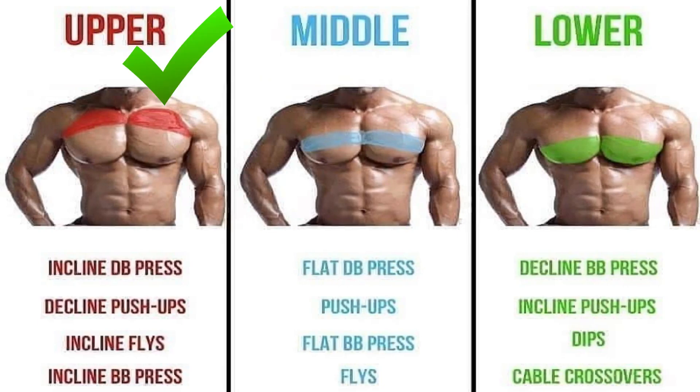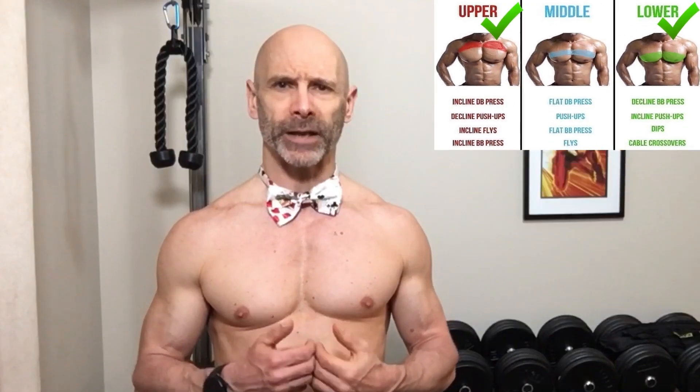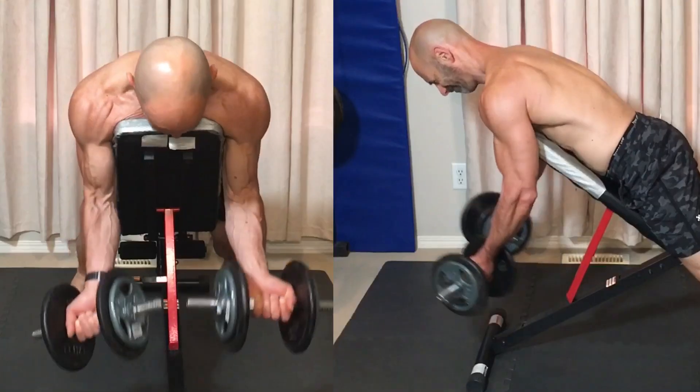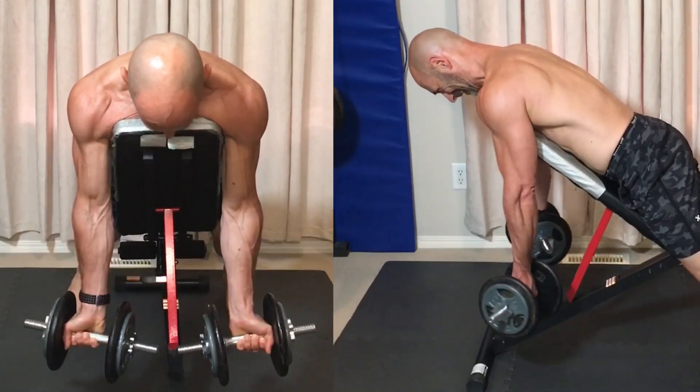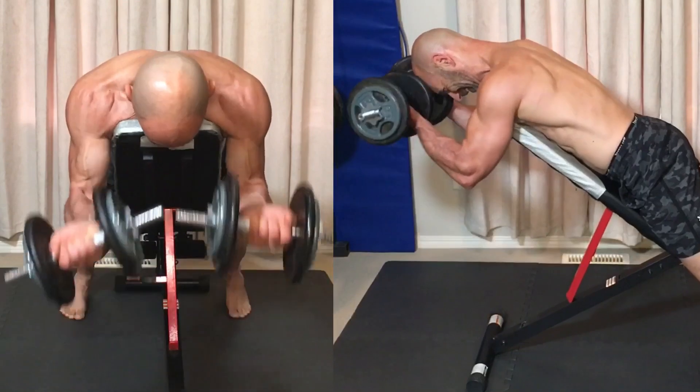Another reason we might want to choose a specific exercise is if we have an imbalance in a muscle group. Thinking of the chest, we may feel our upper or lower chest is lacking, so we'll prioritize the exercise that hits that area. In my case, my bicep development is a weak point — in particular, the short head of the bicep — so most of the exercises I'm doing now emphasize the short head.